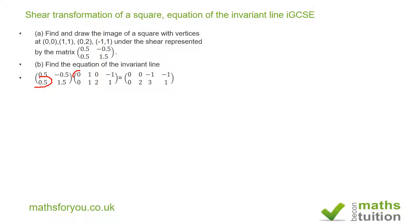Similarly for this column I do 0.5 times 1 plus -0.5 times 1 and I get 0.